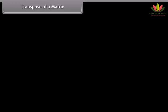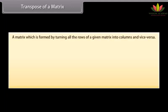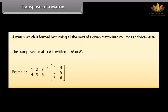Transpose of a matrix: A matrix which is formed by turning all the rows of a given matrix into columns and vice versa. The transpose of matrix A can be written as A'. For example, transpose of matrix A row-wise — first row: 1, 2, 3.